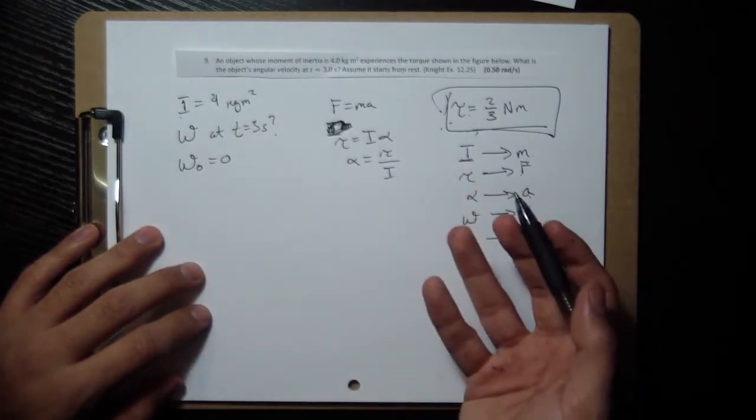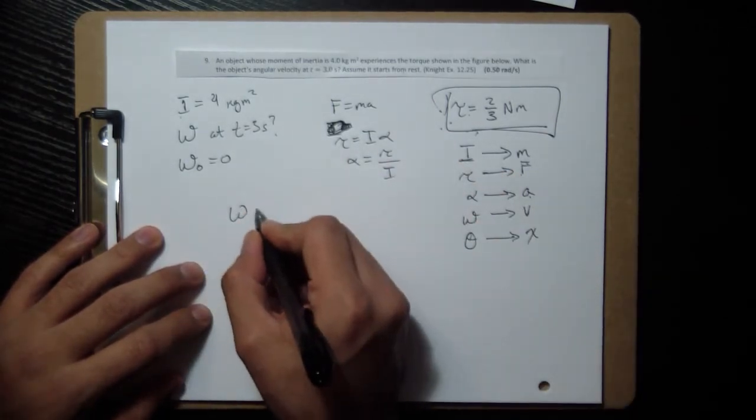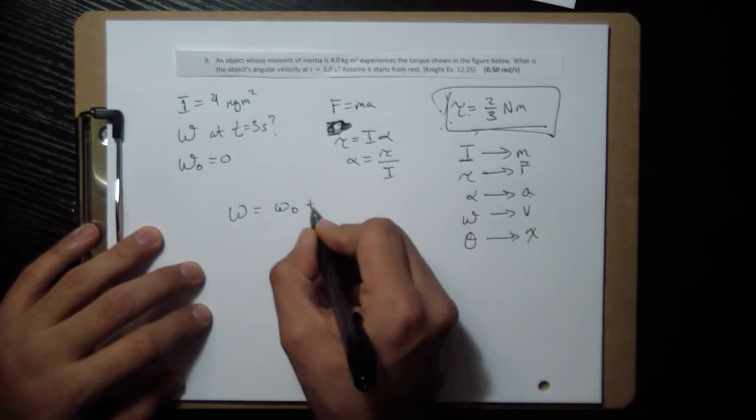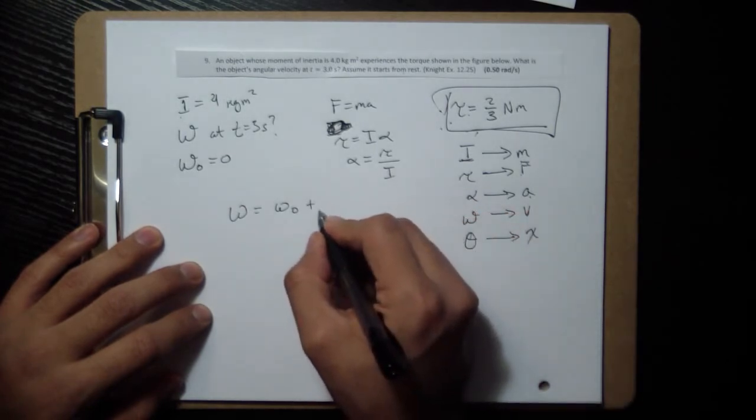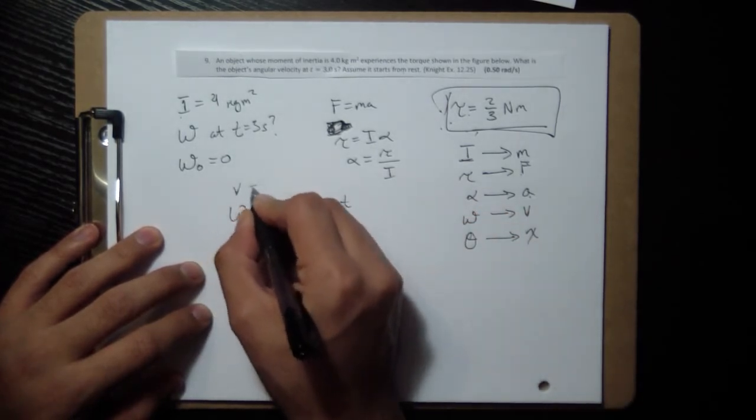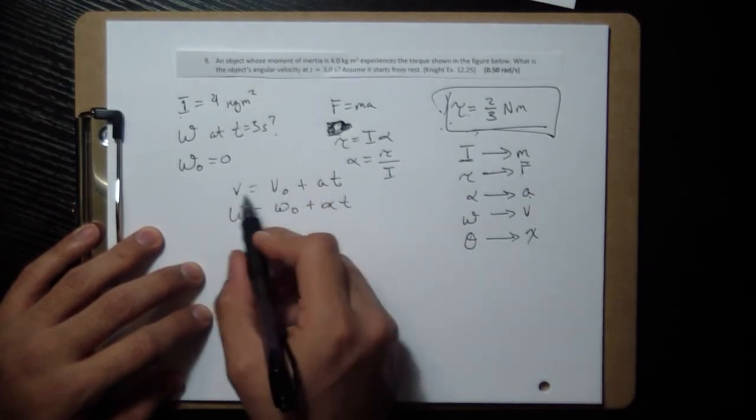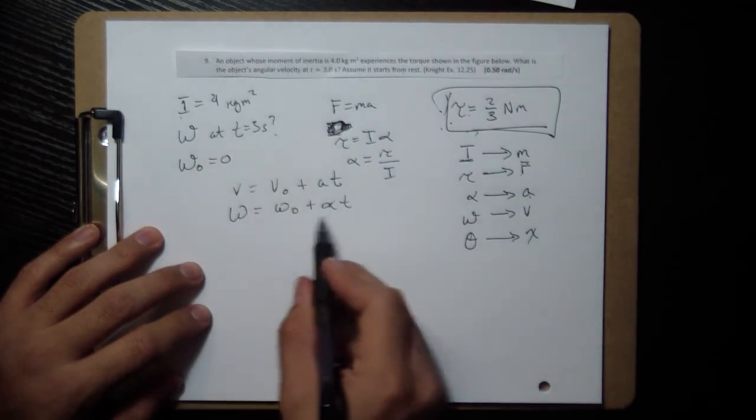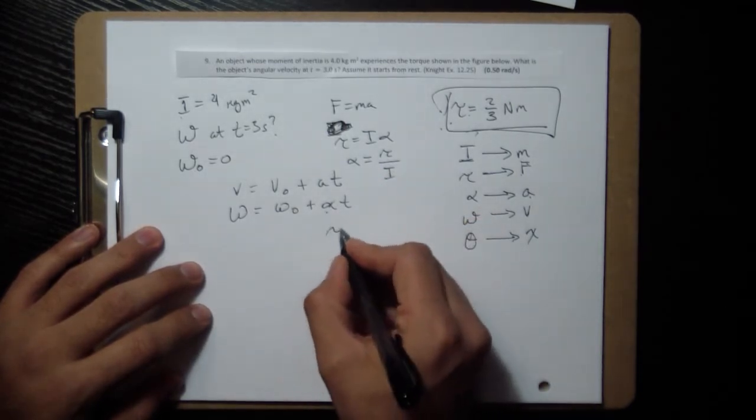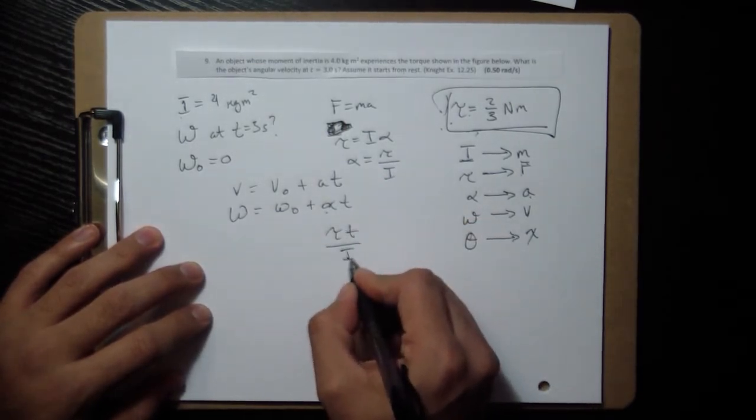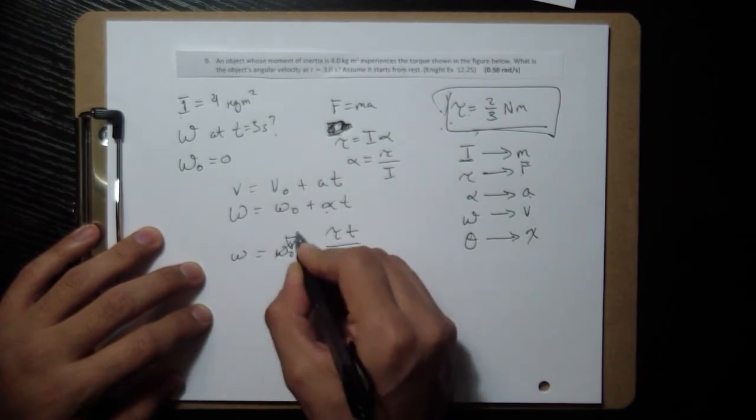So we use one of the kinematic equations, and this one's actually pretty straightforward. It's going to be this equation, which comes from this analog in the linear world. And instead of alpha, we can write tau over I. This is 0.